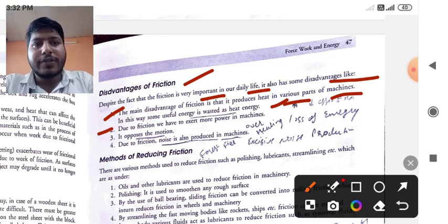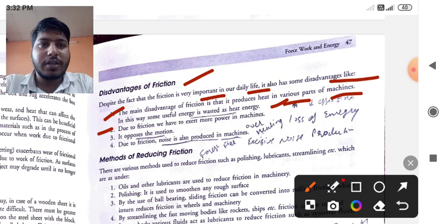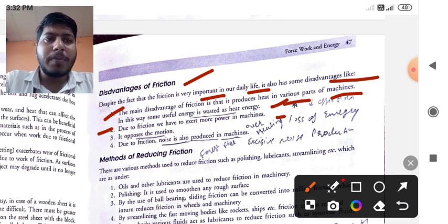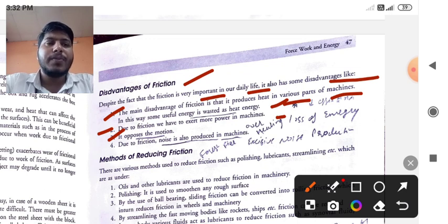The second point which is given here, due to the friction, we have to exert more power in the machine. The third point which is given, it opposes the motion.